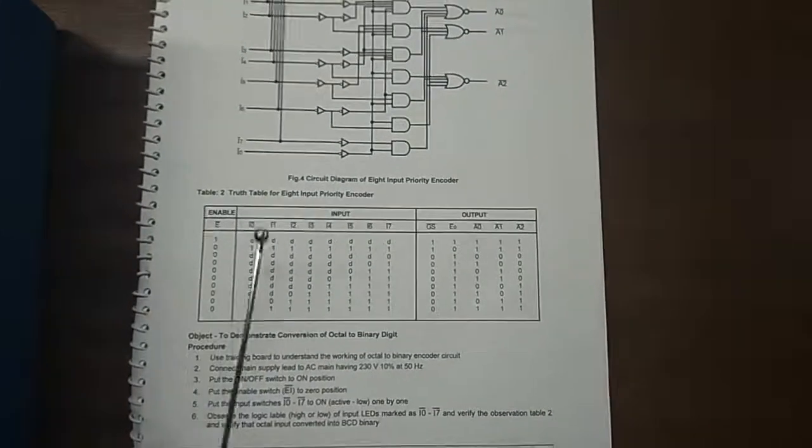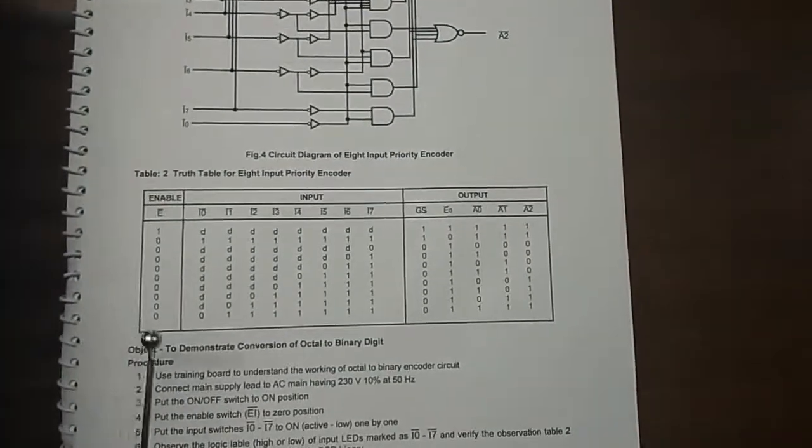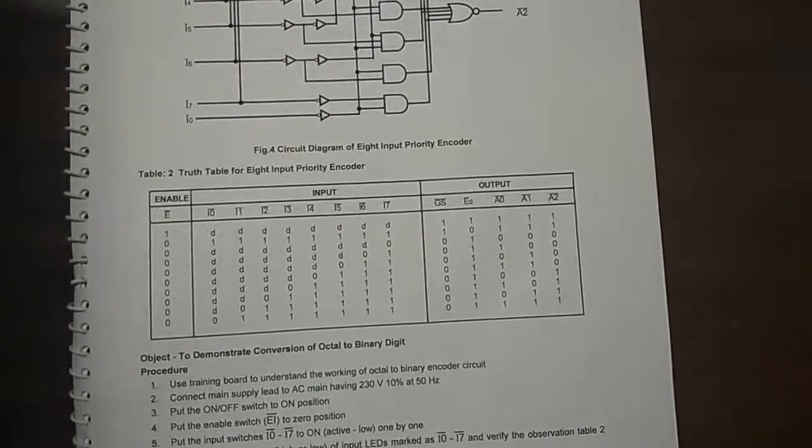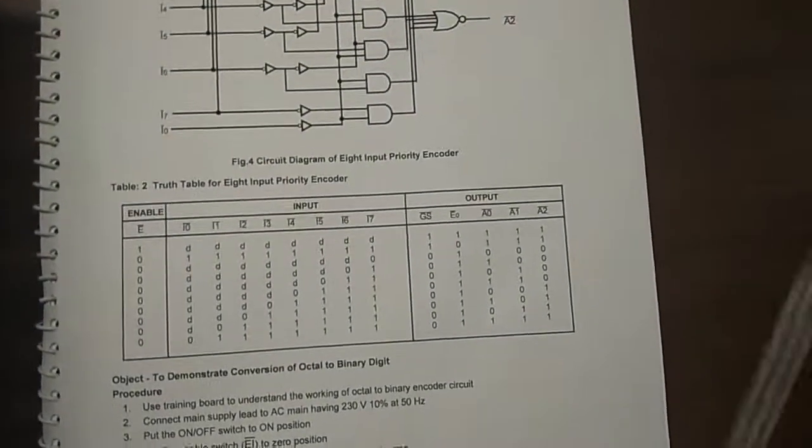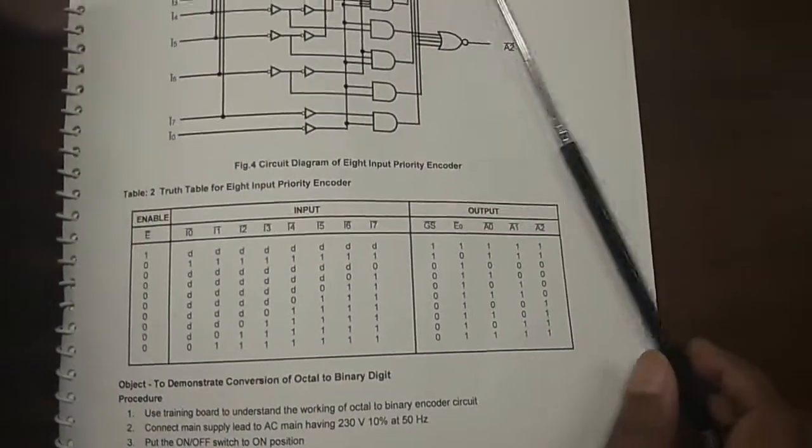This is the truth table for 8 input priority encoder which we are going to verify and we will observe the octal to binary encoding.